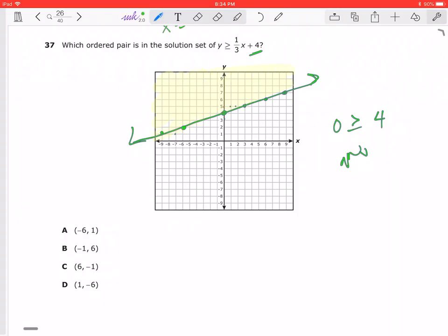So I need to shade on this side of my graph. Now let's look at the point (-6, 1) - that's there but that's not an answer choice.